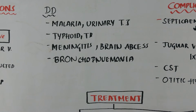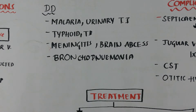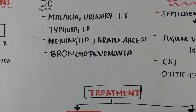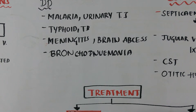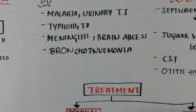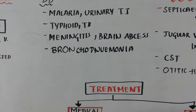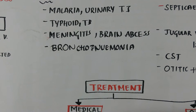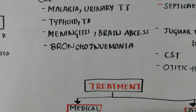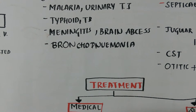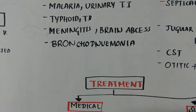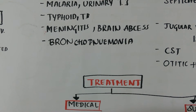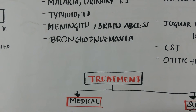Differential diagnosis includes malaria and urinary tract infections, as they are associated with fever with rigors, and prolonged fever types in typhoid and tuberculosis. Meningitis: temperature is high and continued. Brain abscess: temperature is subnormal. Bronchopneumonia is also considered.